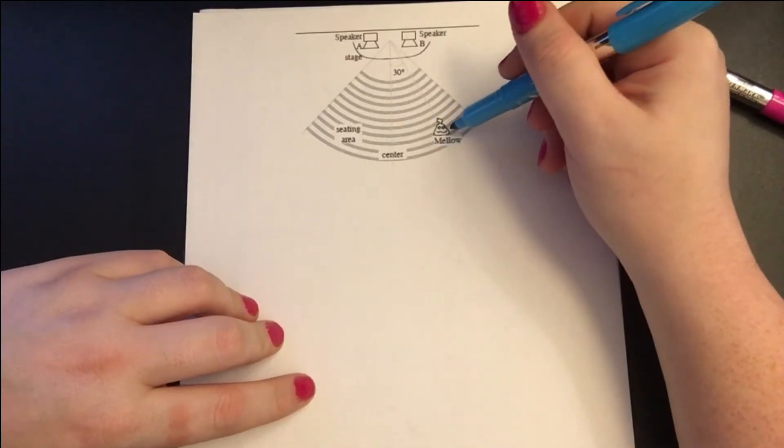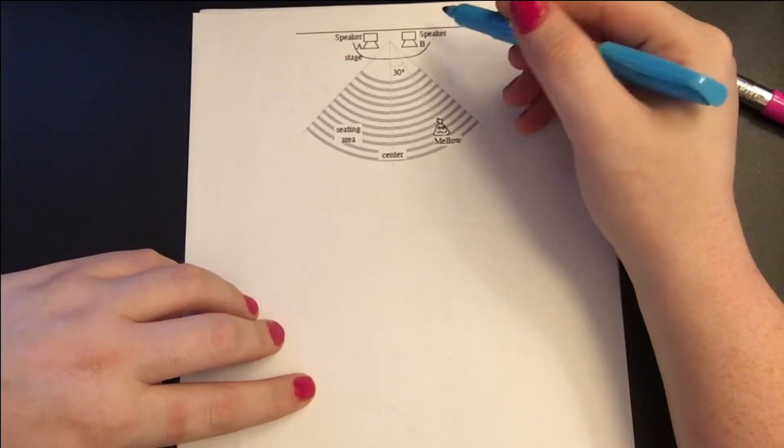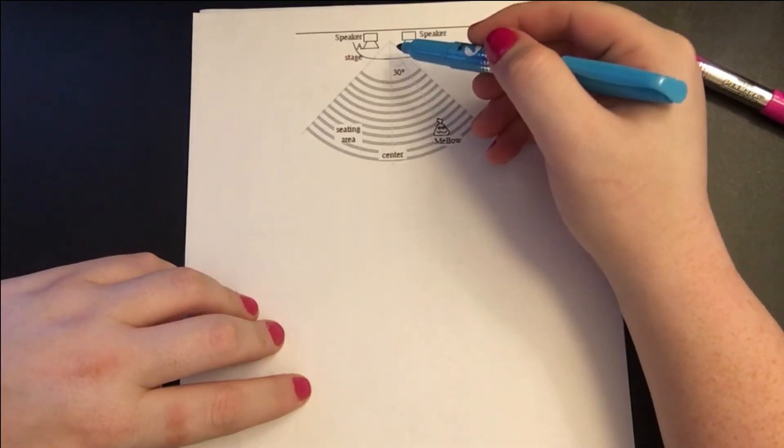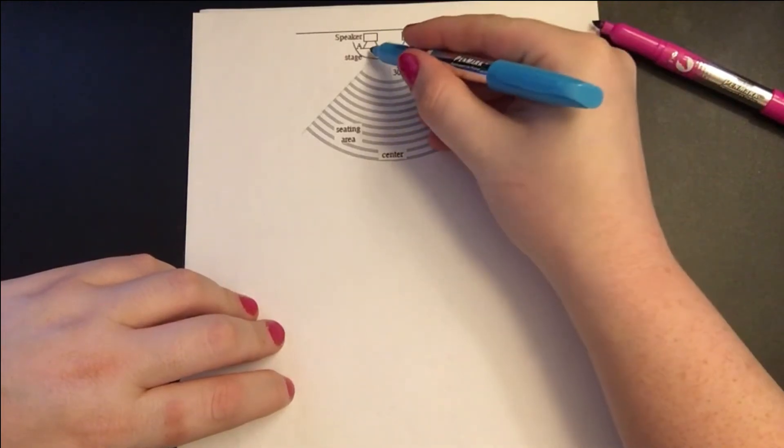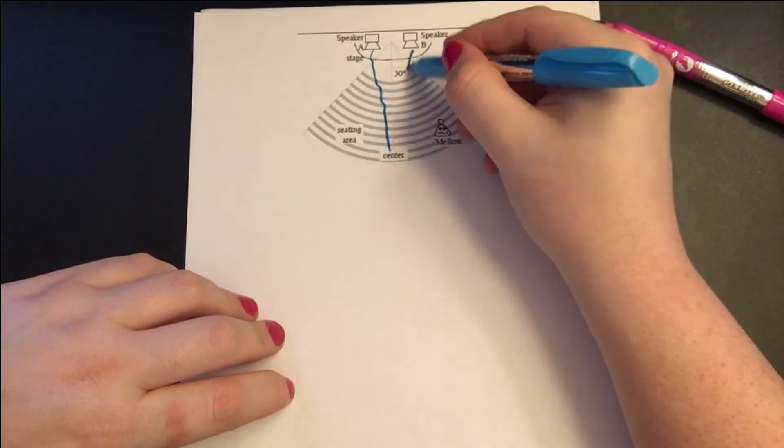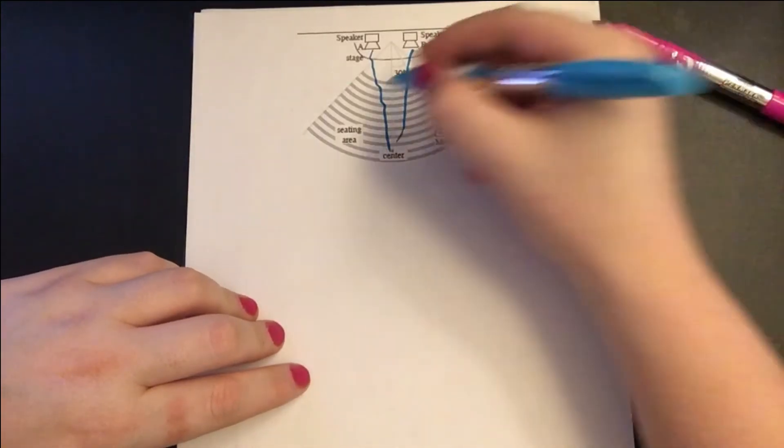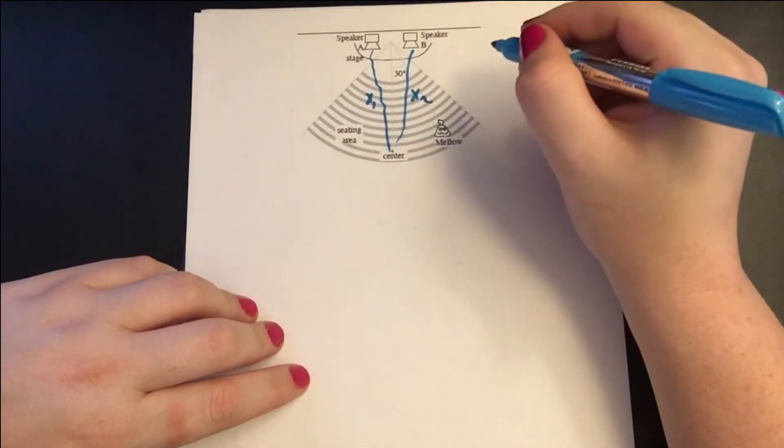Mello knows that these two speakers are wired oppositely. Let's see how she knows that. If we take a look at the path length between speaker A and speaker B, that's the distance the wave needs to travel, it's the same distance. So x1 and x2 are the same.